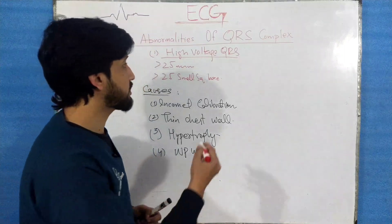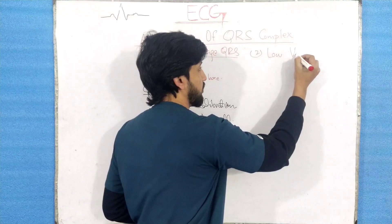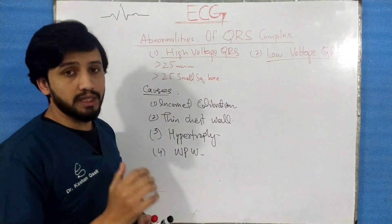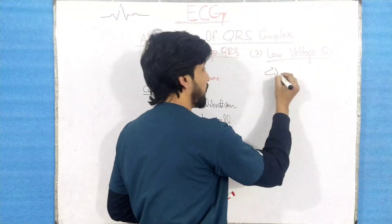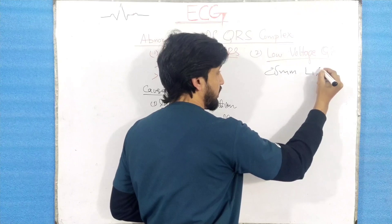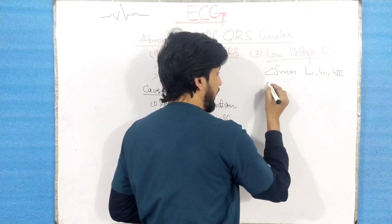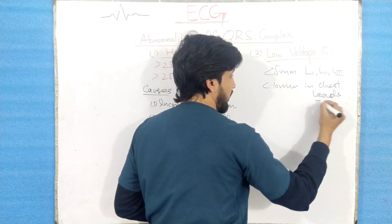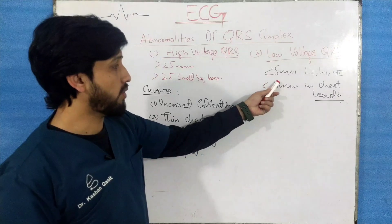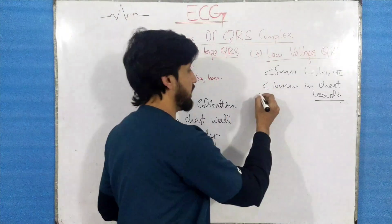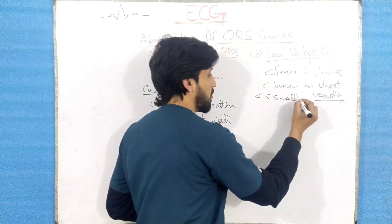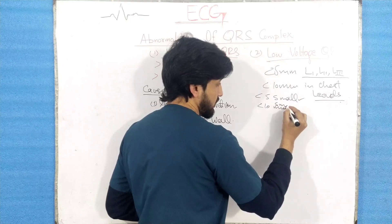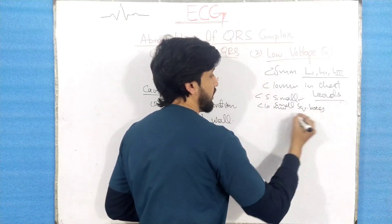Now we are going to discuss the second abnormality, which is low voltage QRS complex. When you say that the voltage is low, this means it is less than 5 millimeters in leads I, II, and III, and less than 10 millimeters in the chest leads. These are the leads recording the electrical activity of the heart, and less than 5 millimeters means less than 5 small square boxes in the limb leads, and less than 10 millimeters means less than 10 small square boxes in the chest leads.